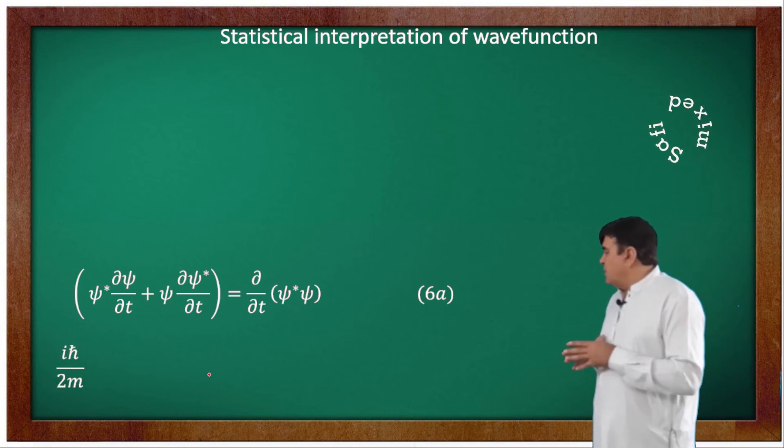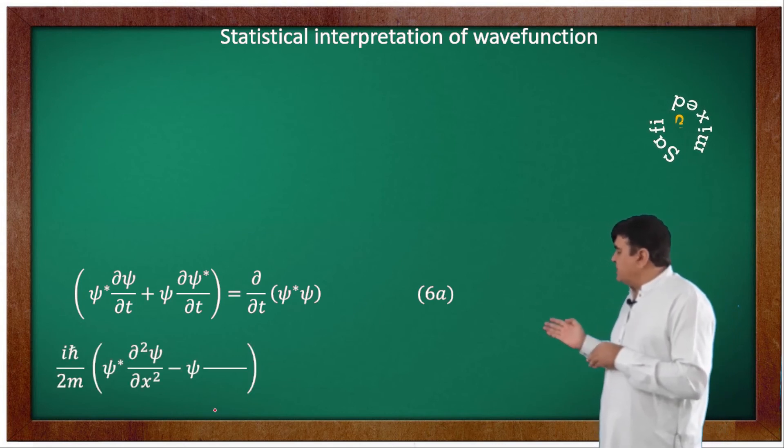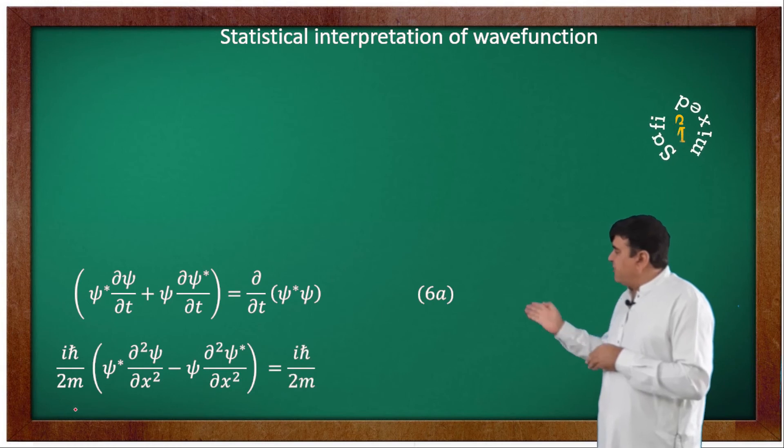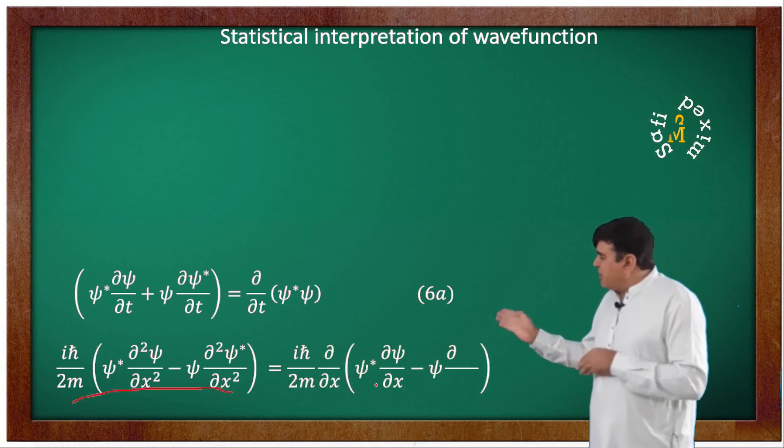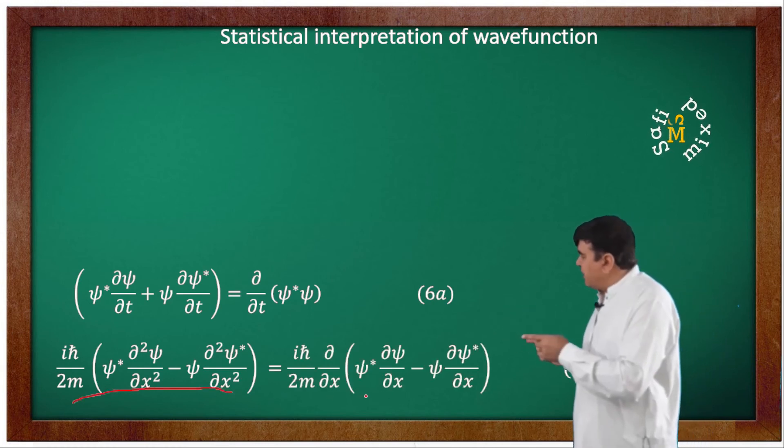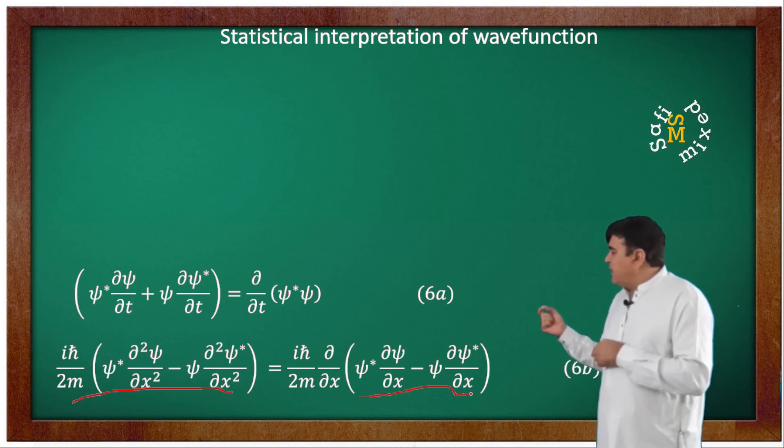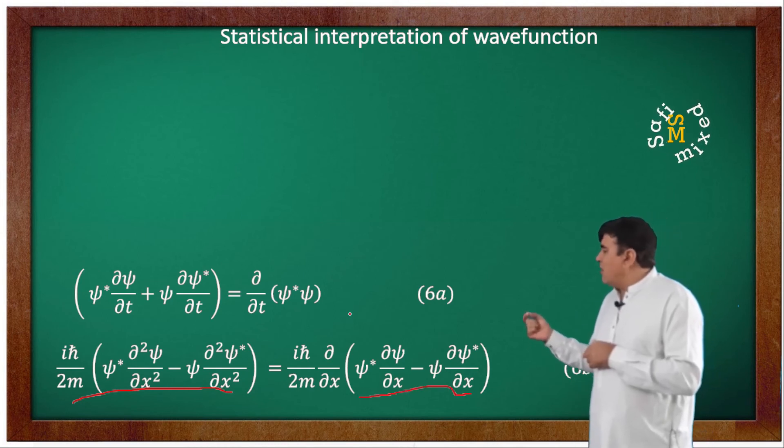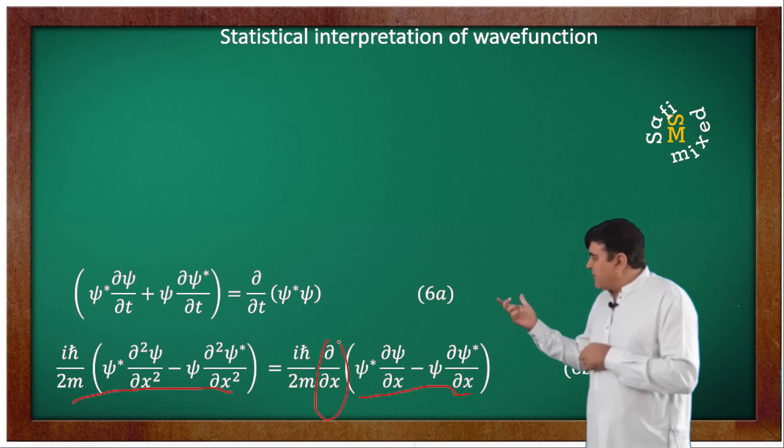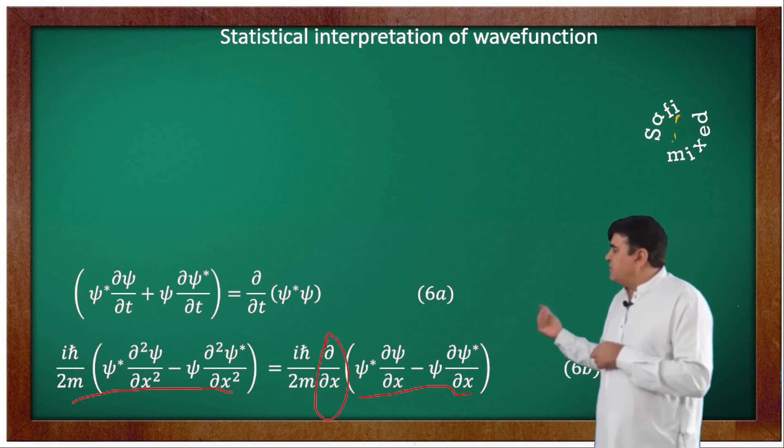And it is not difficult to express the right side of equation 5 into this form where on the left I have written the right side of equation 5 and on the right I have rearranged the quantity inside the bracket. If I open up the bracket and use the product rule of differentiation, the right side straightaway reduces to the left side.